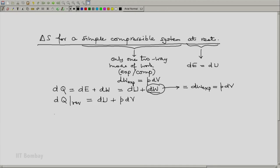Because of this, our ds which is defined as dq by t reversible is du plus pdv by t. It is this expression which we will need to integrate to obtain the change in entropy between two states.